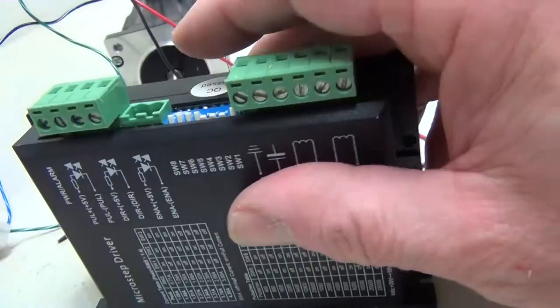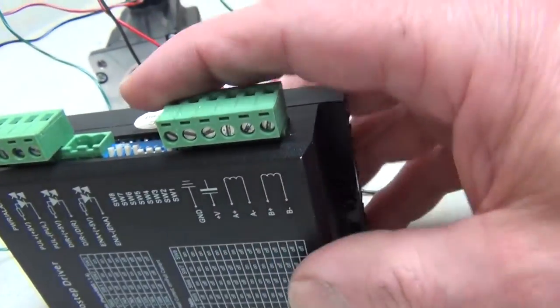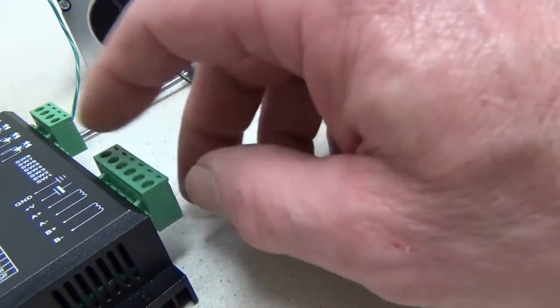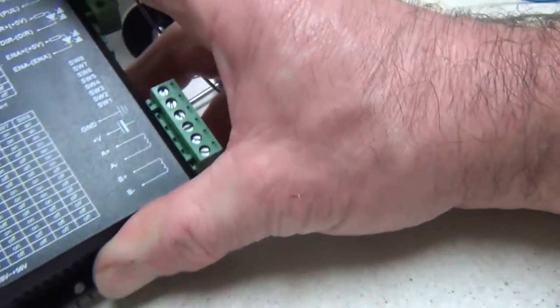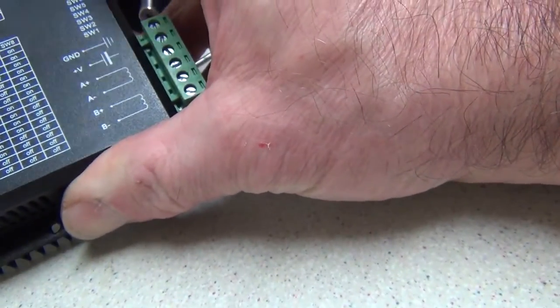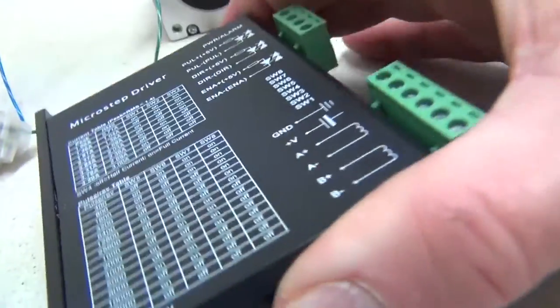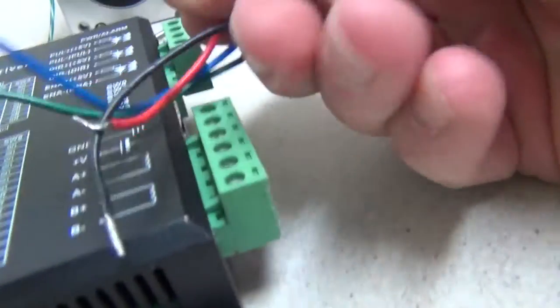If you've got some safety stuff you need to hook up, hook it up later on. Let's just get the thing working to start with. The bits we're interested in are these bits here. On here instead of A and A-bar we've got A+ and A-, B+ and B-. We've got four wires, four connections.